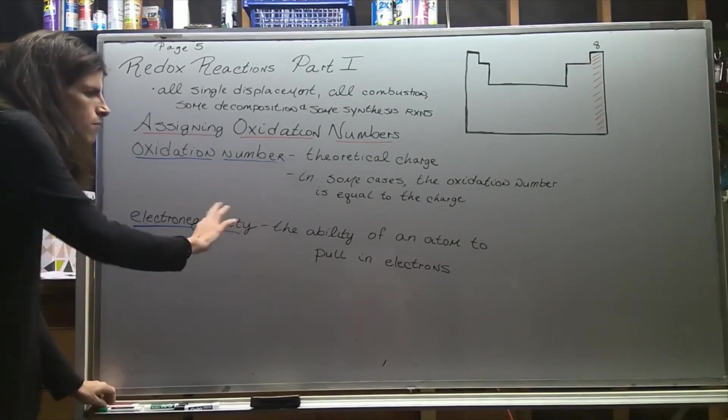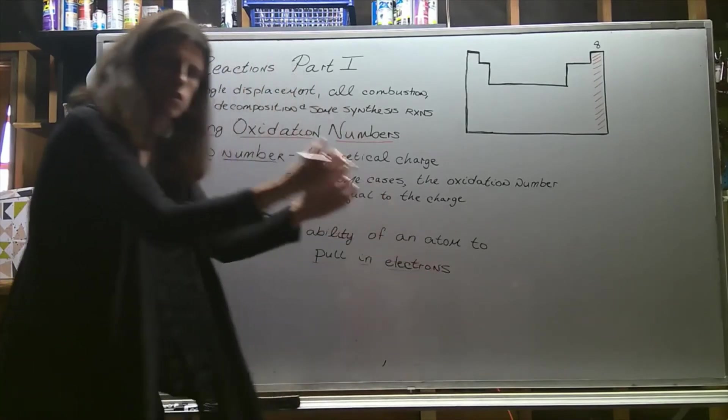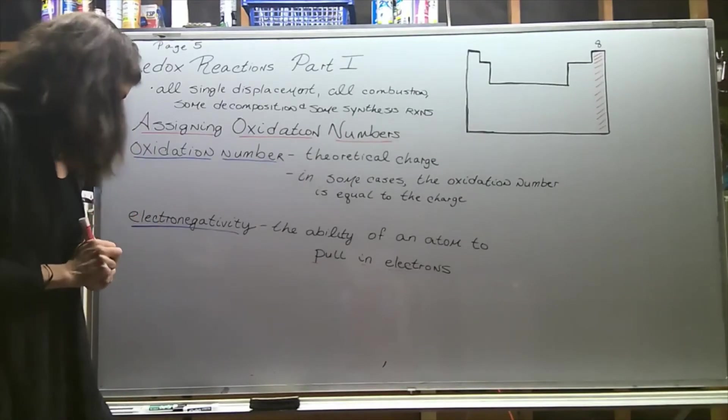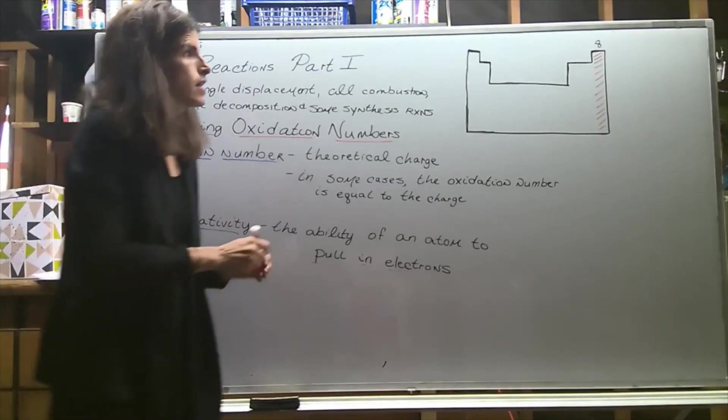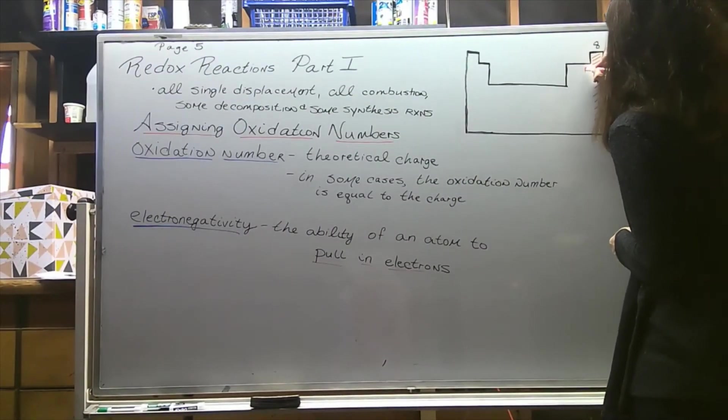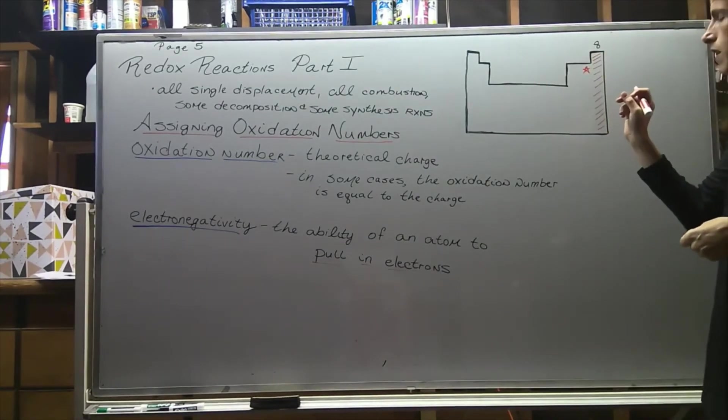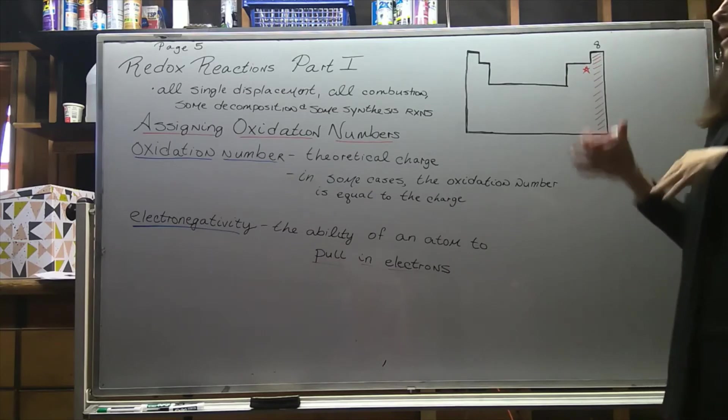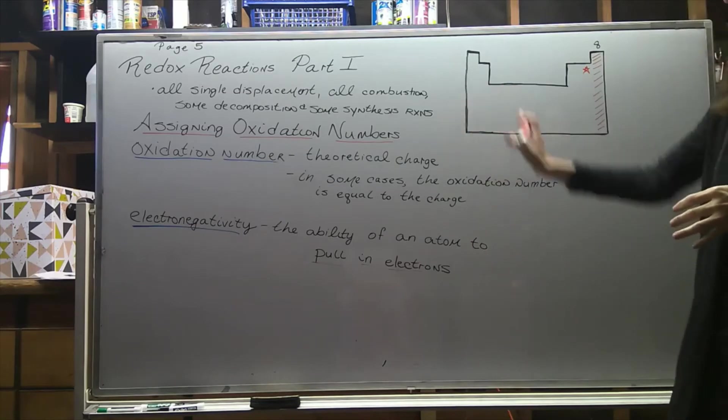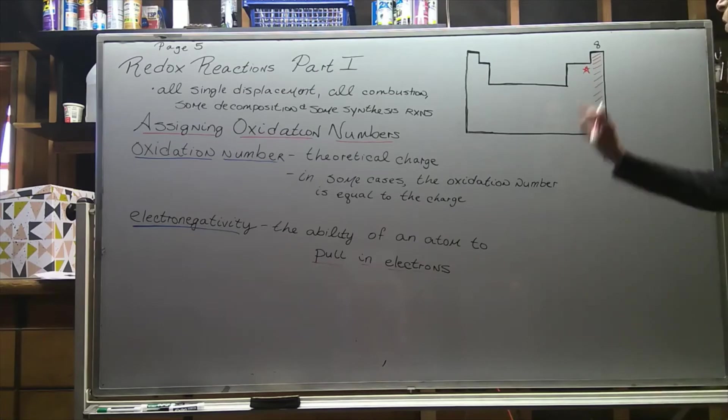Electronegativity is the ability of an atom to pull in electrons - to grab hold of those electrons and pull them into its shell. Fluorine has the highest electronegativity value. The rule of thumb - you can look at published lists of electronegativity values, but what chemists do when assigning oxidation numbers and thinking about electronegativity...